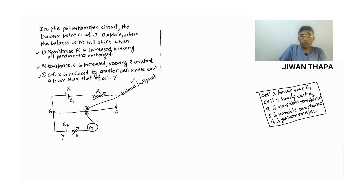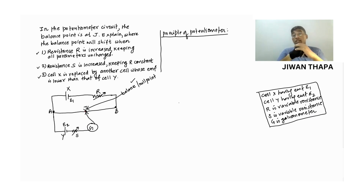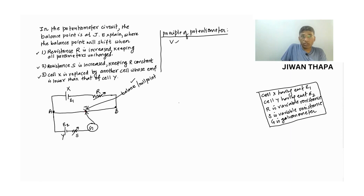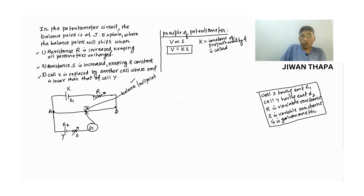Let us discuss briefly the principle of potentiometer. From the principle of potentiometer, the potential drop or fall in potential across any length of the potentiometer wire is directly proportional to the length of that portion of the potentiometer wire. So we can write V proportional to L, therefore V equals K times L, where K is the constant of proportionality and is called the potential gradient.